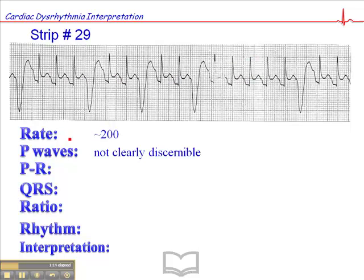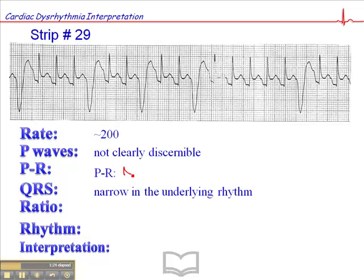The PR interval — since P-waves are not really clearly discernible, we don't see the beginning and end of those P-waves. The PR interval should read not applicable, so I'll write that in there and cross that out.